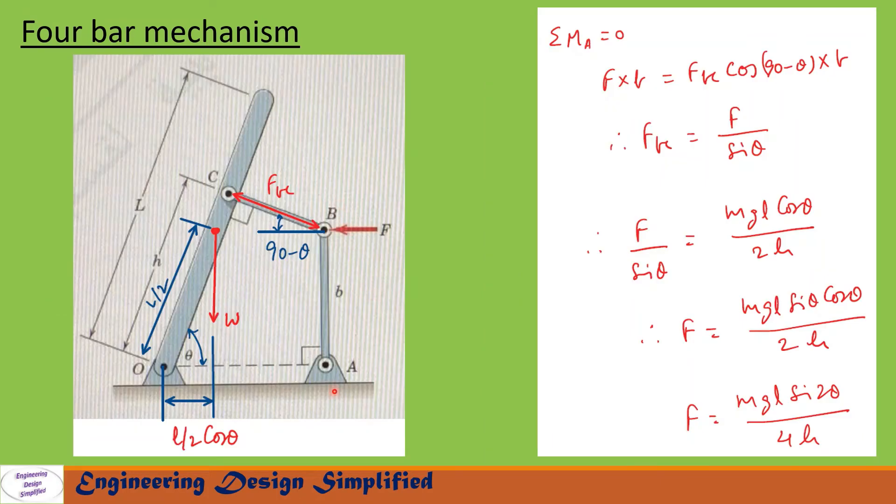Now let us consider link AB. On this link AB there is a horizontal force F acting at point B. The length of AB is b, and FBC, the reaction force of BC, is acting at angle 90 minus theta at point B. Since this angle is theta, the angle between this bar and this line will be theta, and this angle is 90, so this angle will become 90 minus theta.